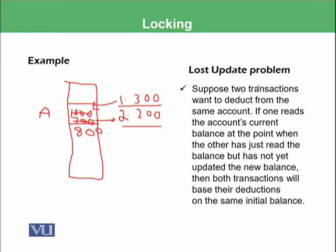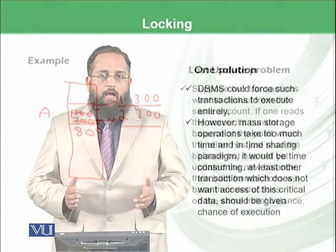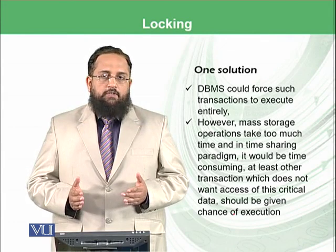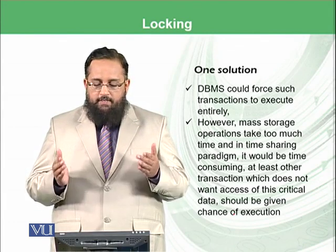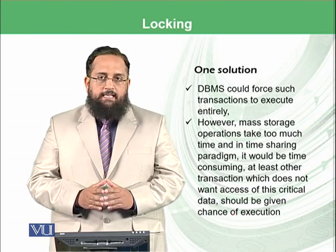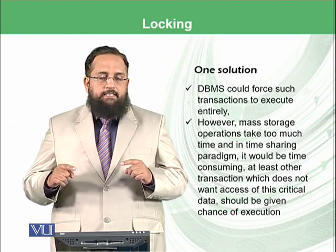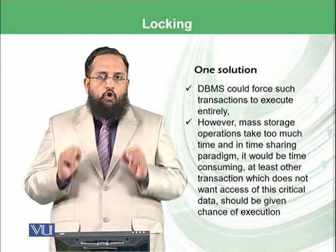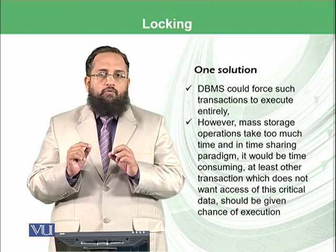So to summarize: two transactions want to deduct from the same account. If one reads the current balance at the point when the other has just read the balance but has not yet updated it, then both transactions will base their deduction on the same initial balance of 1000. One solution is that the DBMS could force such transactions to execute entirely serially, so transaction A should complete its turn before any other instruction can be executed on the CPU.